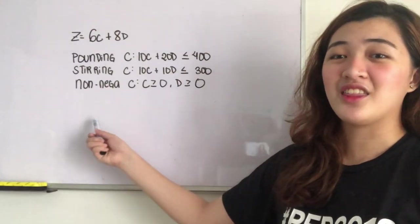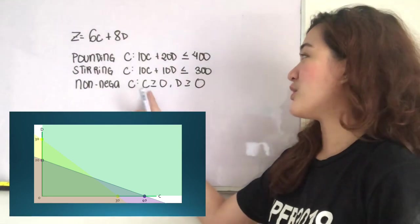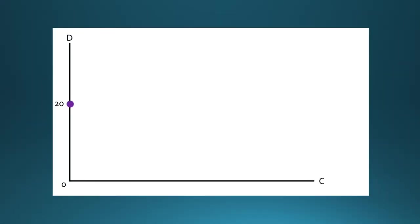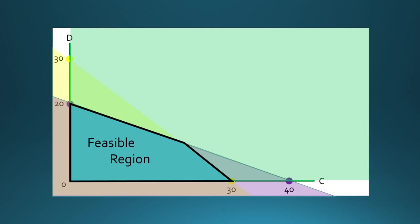Last but not the least is the non-negative constraint. As you can see, both C and D can never be negative. Next, let's go back to the PowerPoint. The area that is shaded within all constraints is the feasible region. These are possible combinations of C and D.